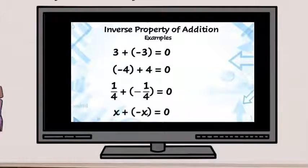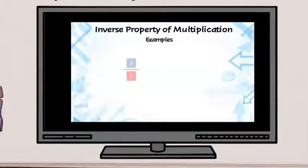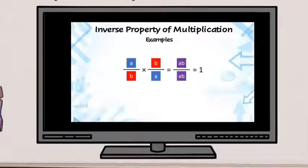The inverse property also applies to multiplication. Consider the fraction a over b. If we multiply by the opposite, the reciprocal, which is b over a, we get ab over ab. And we know that anything over itself is equal to one.